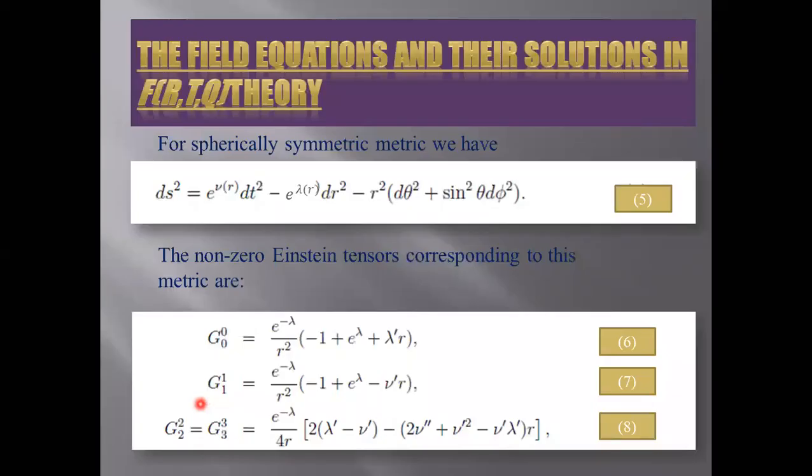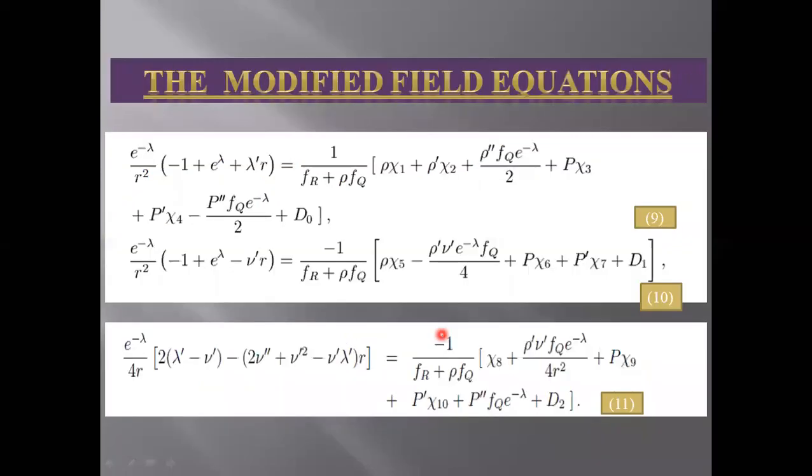Next, we will evaluate the modified field equations. For this, we have considered first of all a spherically symmetric static metric and then find out the non-zero Einstein tensors. After that, we evaluate the modified field equations which are given in equations 9, 10, and 11.